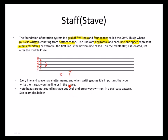Every line and space has a letter name, as we've explained — the first line is E. We use letters to label our lines and spaces. When writing notes, it is important to write them neatly on the line or inside the space. Note heads are not round in shape but oval.